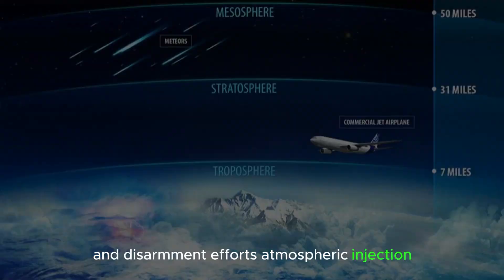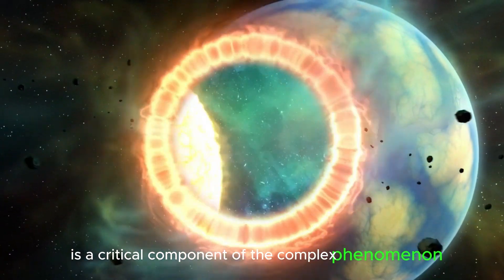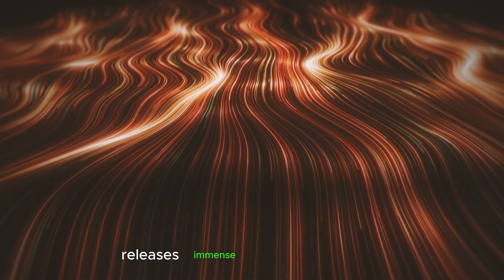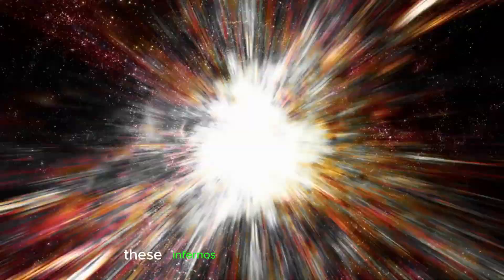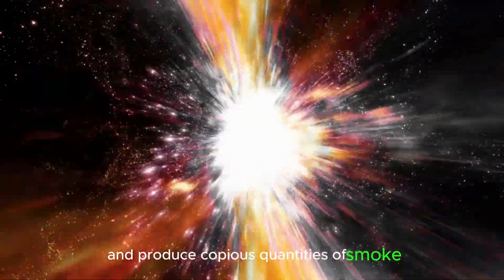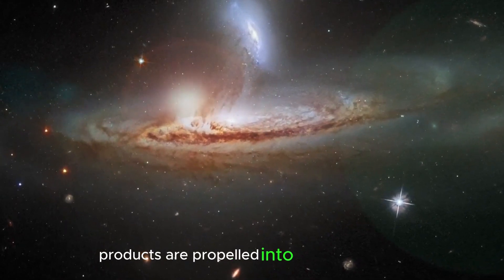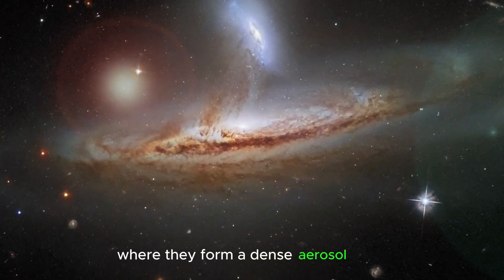Atmospheric injection is a critical component of nuclear winter. Following a large-scale nuclear war, the detonation of nuclear weapons releases immense amounts of energy, triggering firestorms that consume urban and industrial areas. These infernos produce copious quantities of smoke, soot, and other particulate matter. As these combustion byproducts are propelled into the atmosphere, they ascend to the upper layers, where they form a dense aerosol layer.